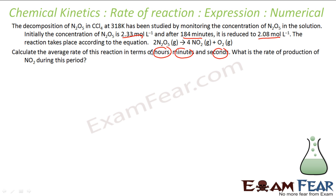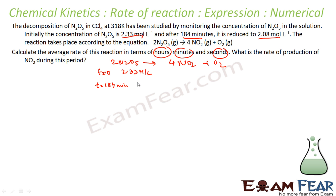So let's see this. The reaction we have is: 2N₂O₅ gives 4NO₂ plus something. At T = 0, the concentration of N₂O₅ is 2.33 moles per litre. At T = 184 minutes, the concentration is 2.08 moles per litre. For the average rate, since the change in concentration of N₂O₅ is given, we write minus 1 by 2 — negative because it's a reactant, and 1 by 2 because 2 is the coefficient — times the change in concentration of N₂O₅ by ΔT.